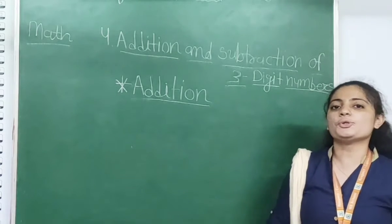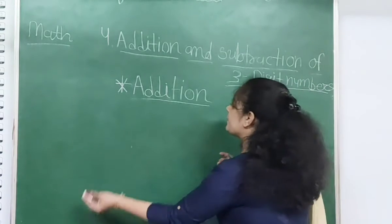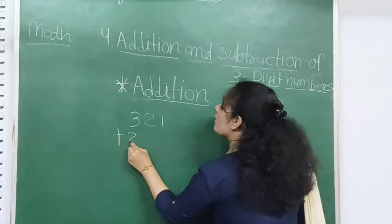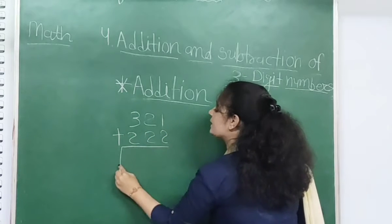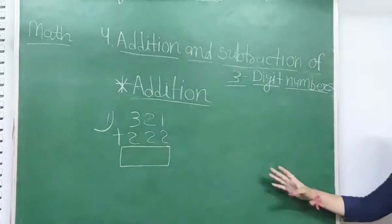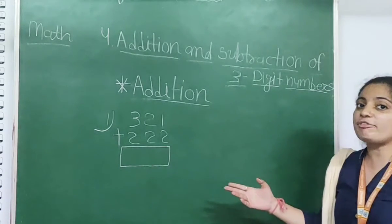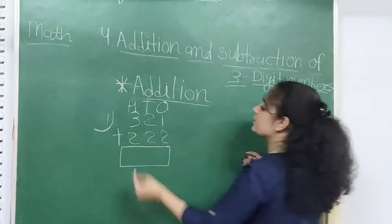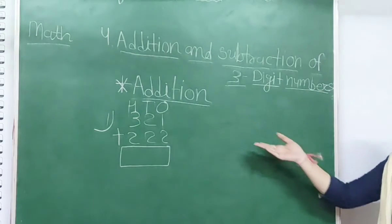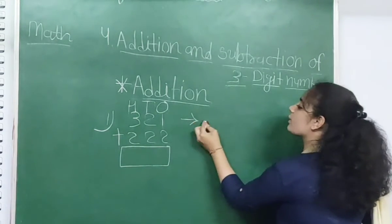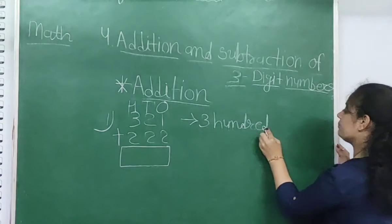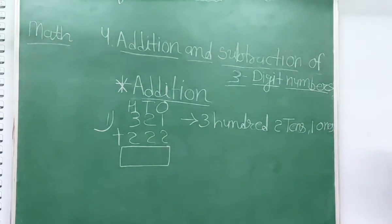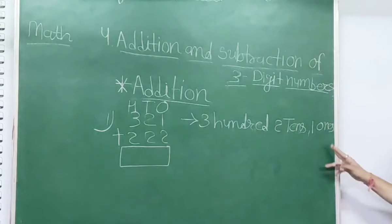Now moving to addition of 3 digit numbers. For example, 321 plus 222. Here I have taken the example 321 plus 222. I am writing 100s, 10s, and 1s on top. So 321 is 300, 2 tens, and 1 one. Then 222 is 200, 2 tens, and 2 ones.